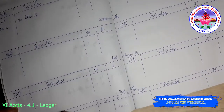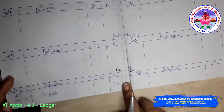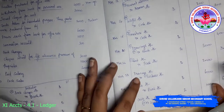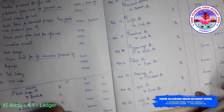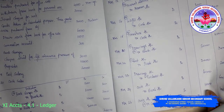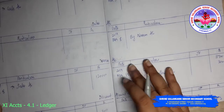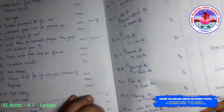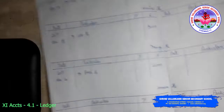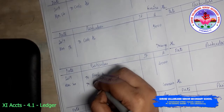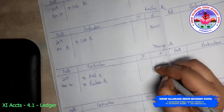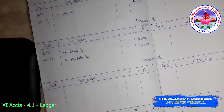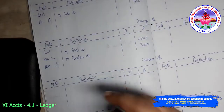I hope that this is clear. The next transaction: drawings to purchases. So drawings you need to write and purchases you need to write. March 23rd, 2000. So drawings account — drawings to purchases — so you need to write 'to purchases' here, 2000. Date is March 23rd.